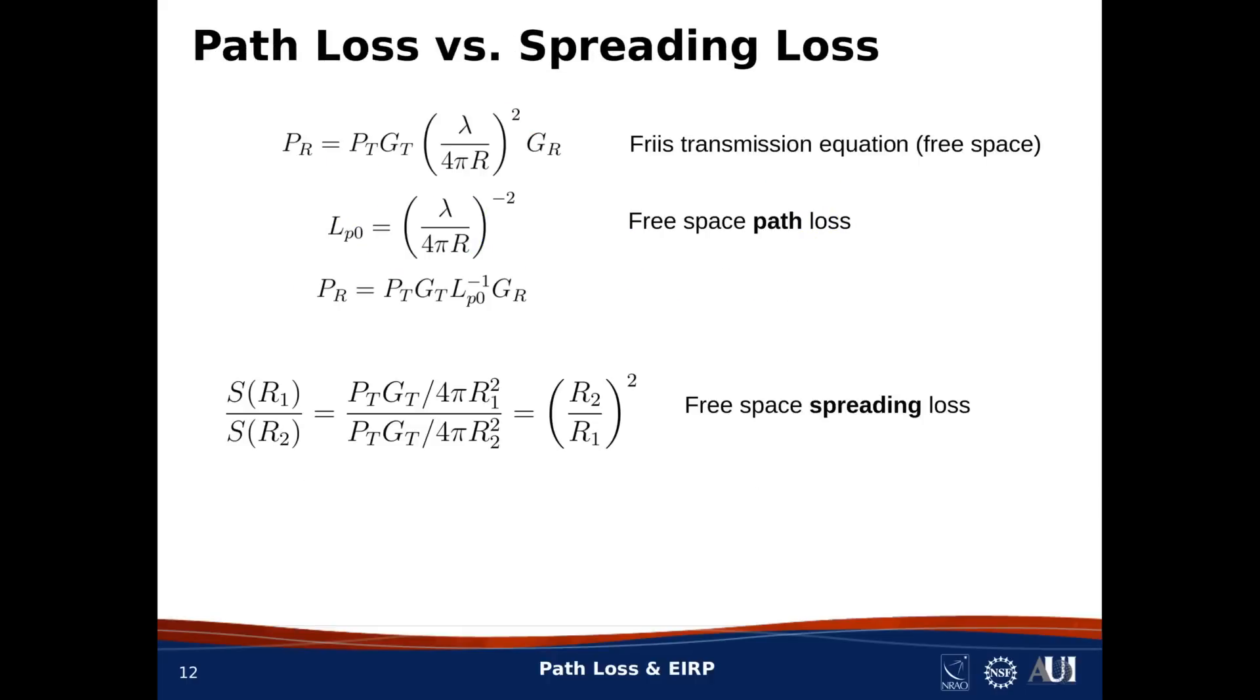Now it's clear that what we've defined as path loss from the Friis transmission equation is very different from spreading loss. In particular, note that path loss depends on wavelength, and that means frequency, whereas the spreading loss depends only on distance and not at all on frequency.